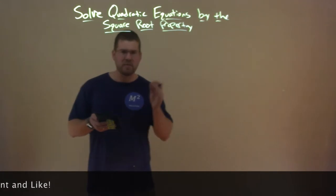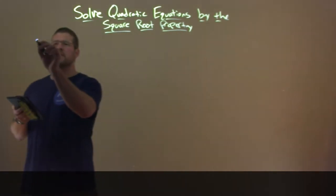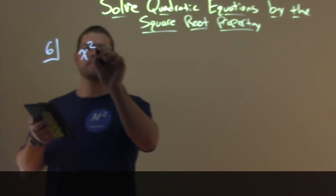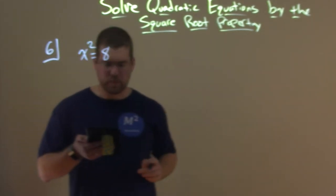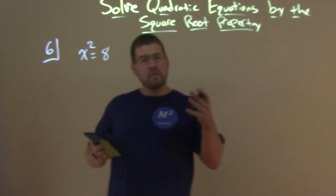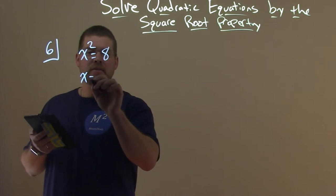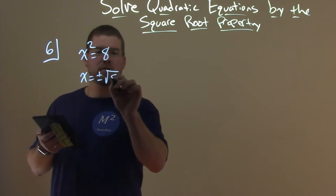Alright, so let's dive in with an example here, example 6, of using the square root property. Let's say we have x-squared equals 8. Well our square root property states that we can take the square root of both sides, giving us x equals plus or minus the square root of 8.